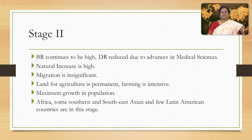Stage 2 is also known as the early expanding stage. In this stage, birth rate continues to be high. Death rate is reduced due to advances in medical science like the smallpox vaccine, improved hygiene and sanitation, improved food production and storage, improved transport of food, and decreased infant mortality rate. Natural increase is high, and this stage experiences maximum growth in population. Migration is insignificant. Land for agriculture is permanent and farming is intensive. Africa, some southern and southeast Asian, and a few Latin American countries are in this stage.